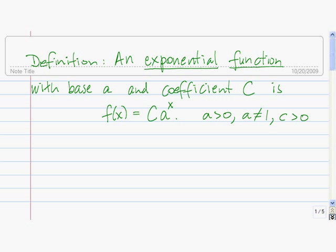There are a couple ways to define exponential functions. The definition I'm going to use is that an exponential function with base a and coefficient C is f(x) = Ca^x, where a > 0, a ≠ 1, and C > 0. So you see that in an exponential function, the variable or the input is actually the exponent. We have a couple of restrictions. One is that the base must be positive.